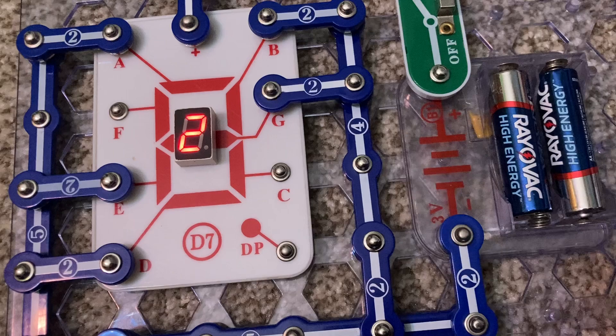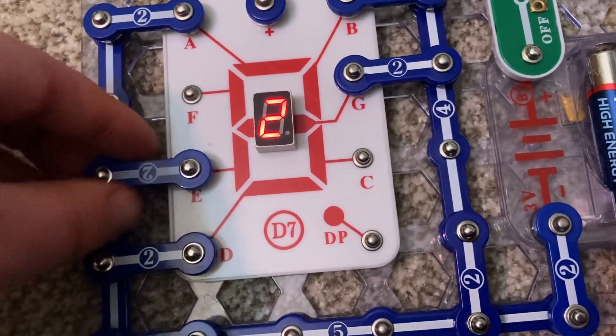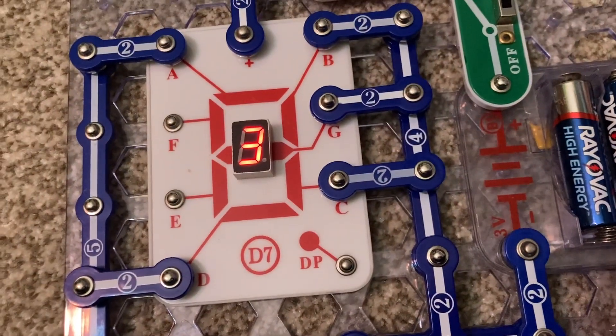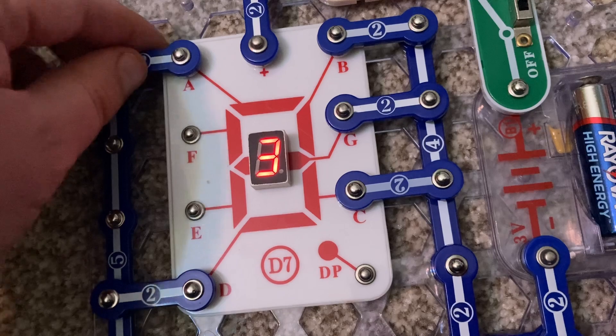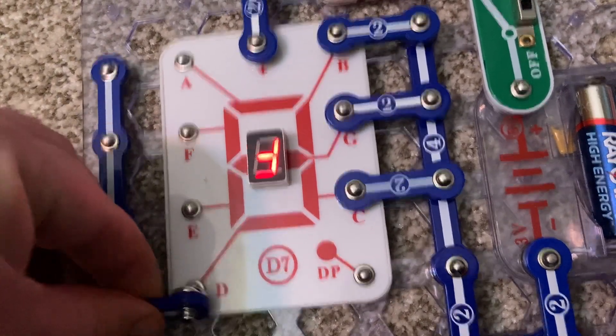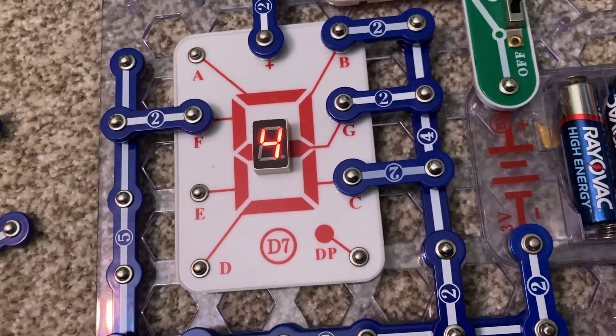For number 3, I am simply going to remove the two snap wire from point E and connect it to point C. For number 4, I am going to remove this connection here, as well as this one, and make a connection with point F.